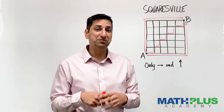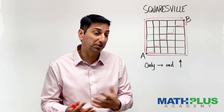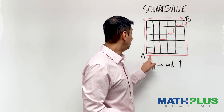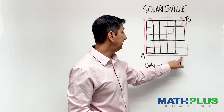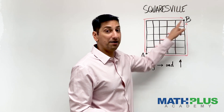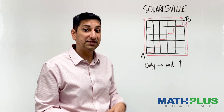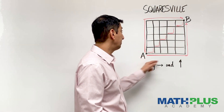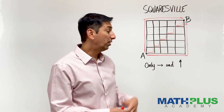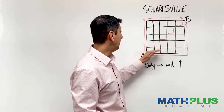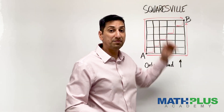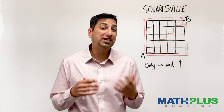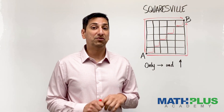Or you might try some new notation. For example, the first path could be described as: right, right, right, right, right, up, up, up, up, up — so 5 rights followed by 5 ups gets you from A to B. Whereas the interior path in the middle is: right, up, right, up, right, up, right, up, and so on. That might be a way to keep track and stay organized with your thinking.